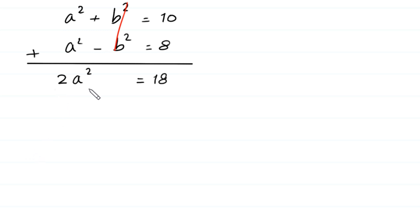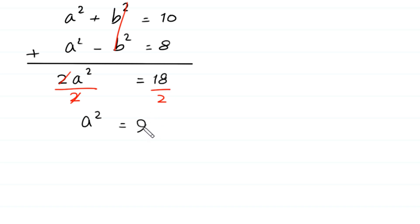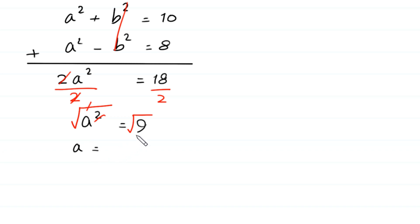Next, we divide both sides of this equation by 2. The 2 cancels and we have a squared is equal to 18 divided by 2, which is 9. From here we take the square root of both sides. The square cancels with the square root and a is equal to the square root of 9, which is plus or minus 3.